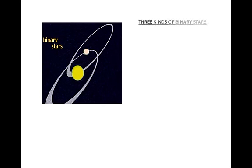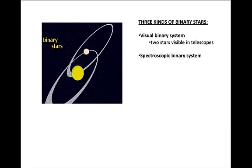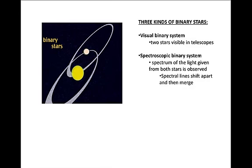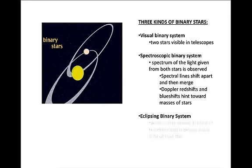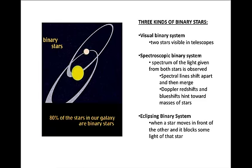Here are three kinds of binary stars. A visual binary system consists of two stars visible in a telescope. In a spectroscopic binary system, a spectrum of the light given from both stars is observed. Finally, in an eclipsing binary system, a star moves in front of another and it blocks some light of that star. Eighty percent of the stars in our galaxy are binary stars.